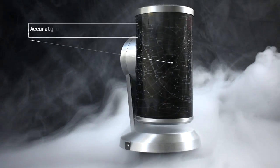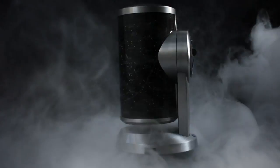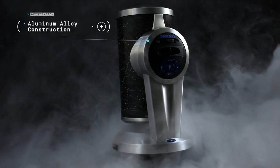The DS-1's sleek design includes an accurate star map wrapping around its cylinder and a polished aluminum alloy construction.